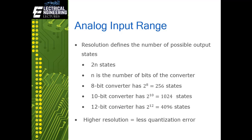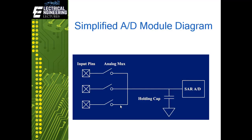Higher resolution also means less quantization error. Here is a simplified analog-to-digital module diagram. The analog input pins are connected to the input of an analog multiplexer, which connects the selected channel to the holding capacitor. The analog multiplexer allows multiple inputs to be available for conversion. It is important to note that there is only one ADC on the microcontroller, so only one channel can be selected and converted at a time.